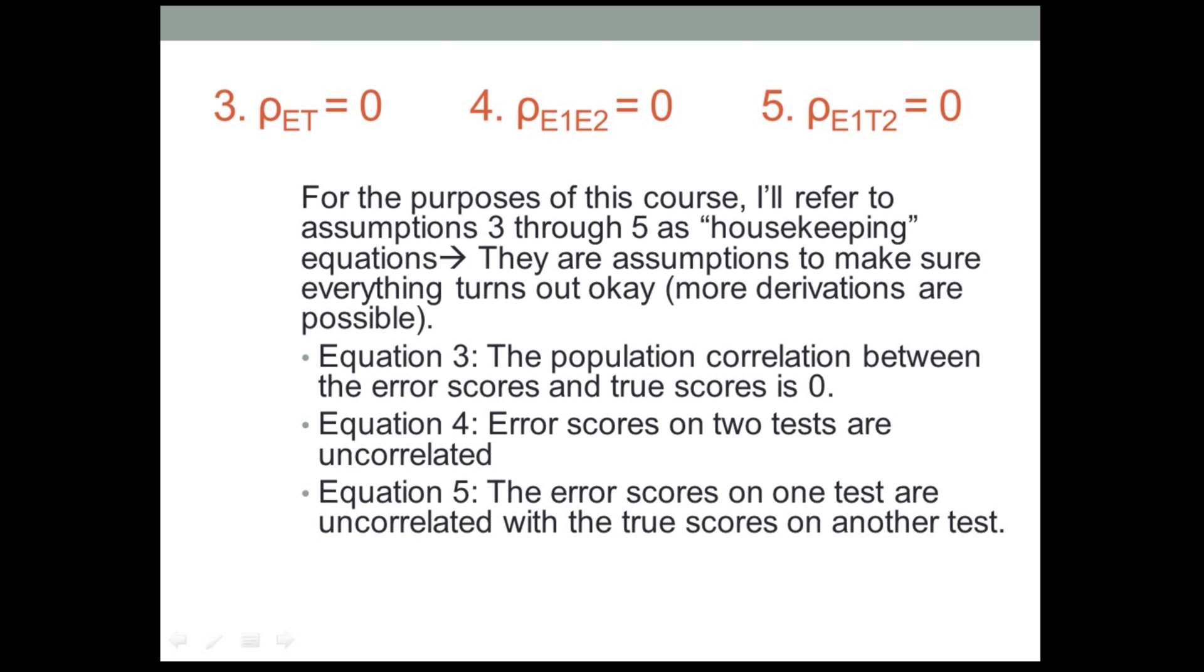Psychometricians introduce these three assumptions so as to help people, so as to help themselves and people who are using the theory to derive additional equations that are useful in applied settings. Now, we're going to encounter those additional equations in a little while, but those are not part of this video, and I'm not going to talk about them now. But the reason I bring that up is that we can consider these three equations to be kind of housekeeping equations. They're assumptions or equations to make sure that everything turns out okay. That is to say that more derivations are possible and with the idea that these other derivations help us understand more about tests. So that's these three equations, three through five. They're a little bit less important, a little bit less significant, but they're reasonable.